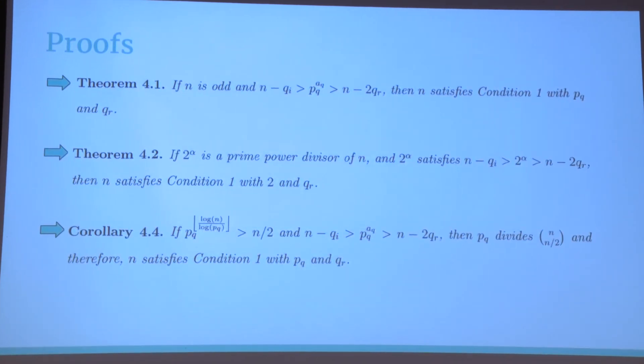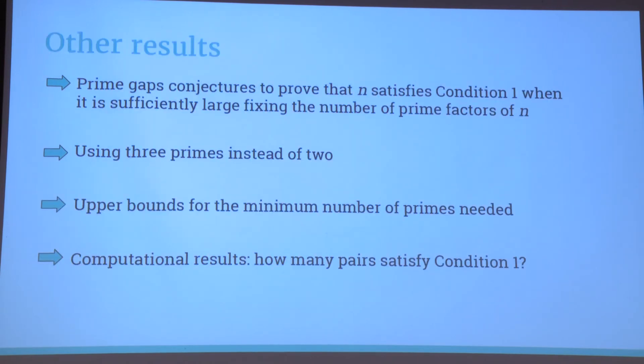With these tools and ideas, we could prove many cases in which n satisfies condition 1. I just wanted to highlight three of them that use qi and pq. Other things that we did was we used prime gaps conjecture to prove that if n is sufficiently large, and we could fix the number of prime factors of n, then n satisfies condition 1. Also, we wondered, what if instead of painting with two colors, we paint with three colors? How many cases can we prove?